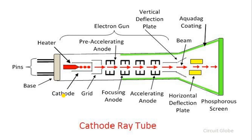So with the use of cathode ray tube, we will show something on screen. So whatever image or video is there, we will show all those things on the screen with the help of cathode ray tube. It is used in the TV. So how this will work, let's see in this video.